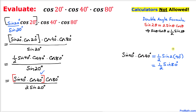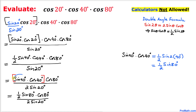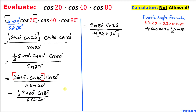Now let's apply the double angle formula again. Sine of 40 degrees times cosine of 40 degrees can be written as one-half times sine of 2 × 40 degrees, which is one-half times sine of 80 degrees. I replace that part with one-half times sine of 80 degrees. Bringing this one-half to the denominator gives us 2 times 2, which becomes 4 times sine of 20 degrees.